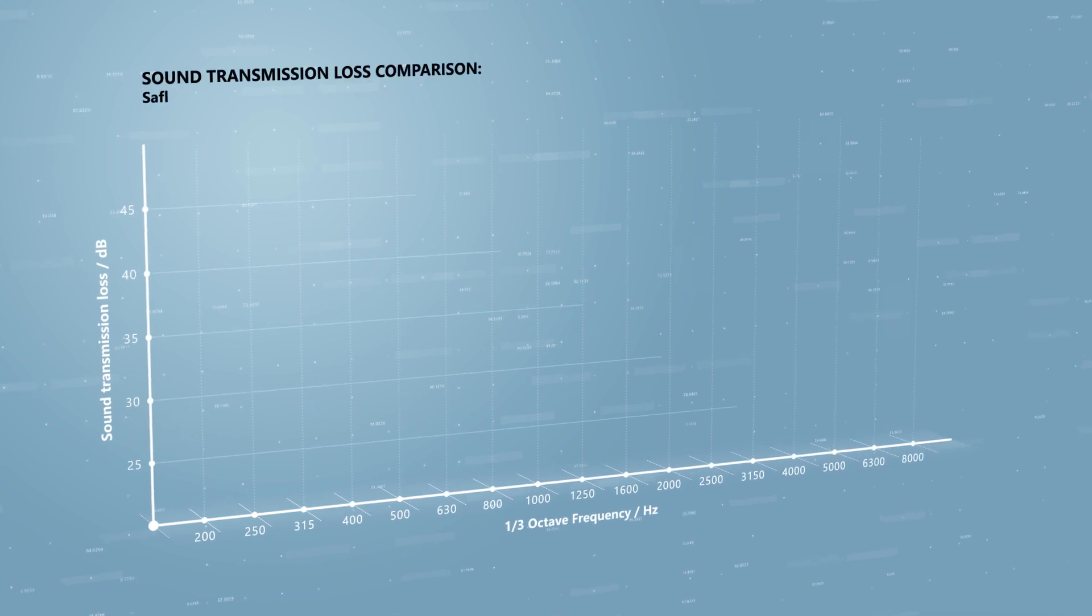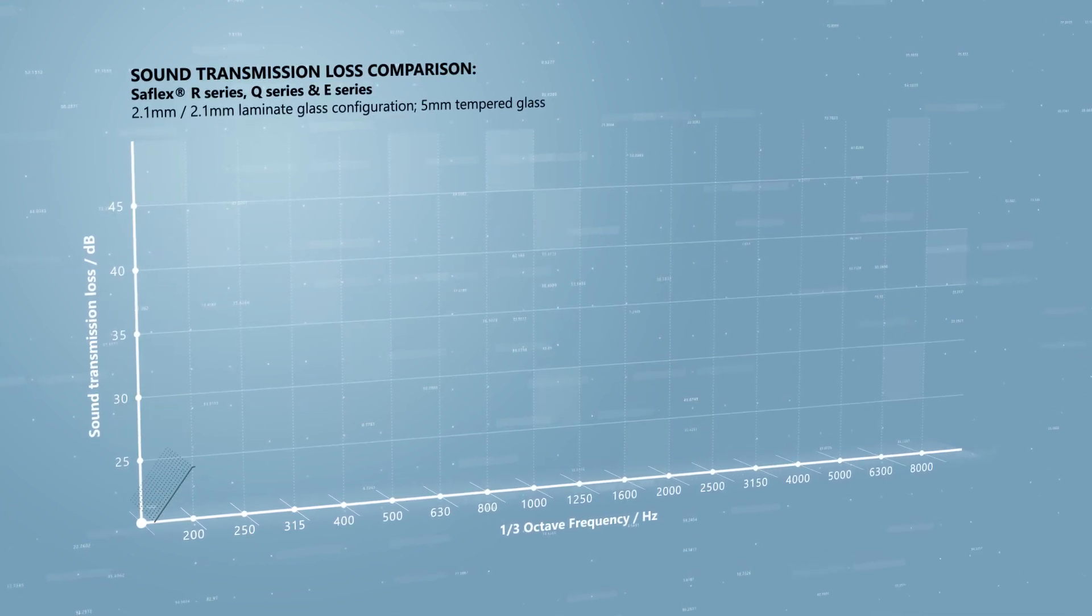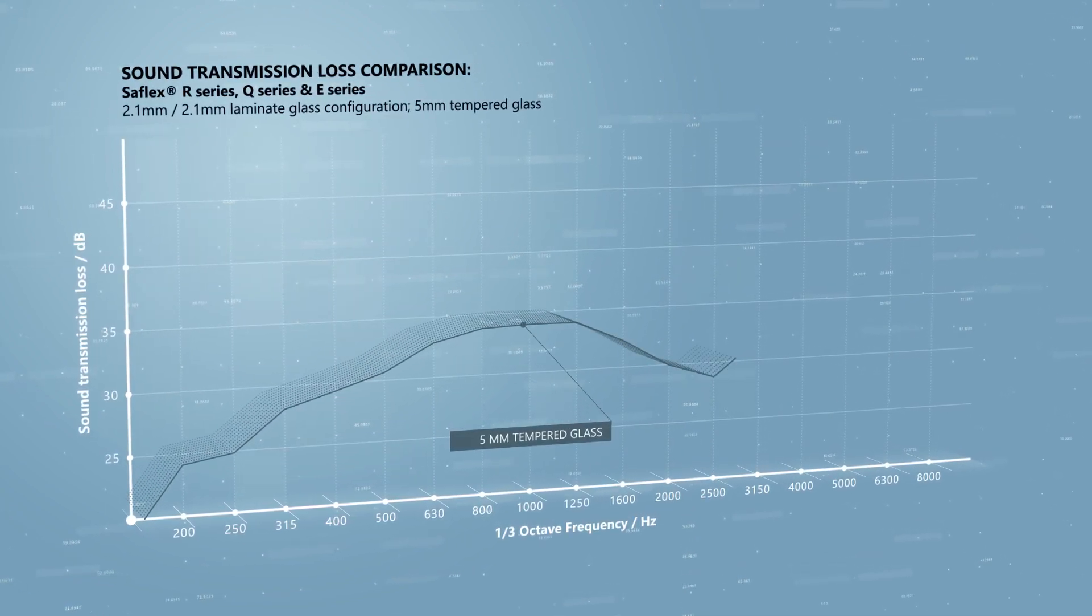The resulting effect is a reduction in interior sound transmission of up to 4.7 decibels when compared to standard laminated glass.